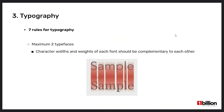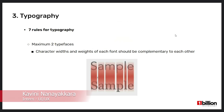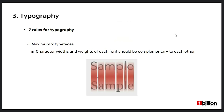Now I'll discuss typography and how we can use it correctly in UI. There are seven rules for typography we need to follow. The first rule is to use a maximum of two typefaces for the UI. The character widths and weights of each should be complementary to each other. For example, these two fonts have similar character widths which creates visual harmony, and the letter spacing is also similar, but the shapes of the letters are different — there should be a visual difference because otherwise there's no point in using a second font.